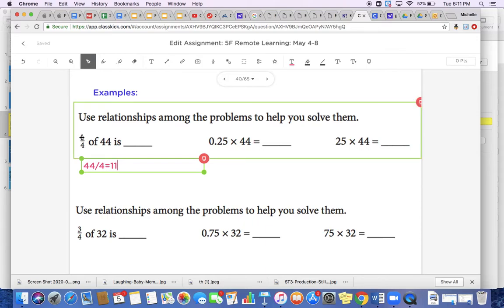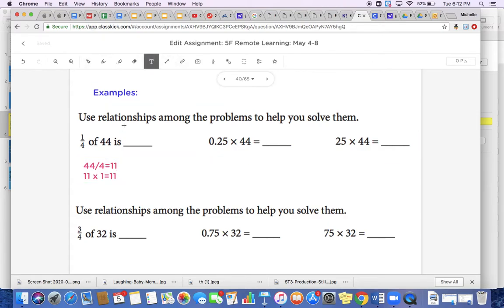Now we have to look at our numerator here, but our numerator is 1. So I'm going to multiply this answer by whatever the numerator is. Well, I know that 11 times 1 equals 11. So my answer to 1/4 of 44 is going to be 11.